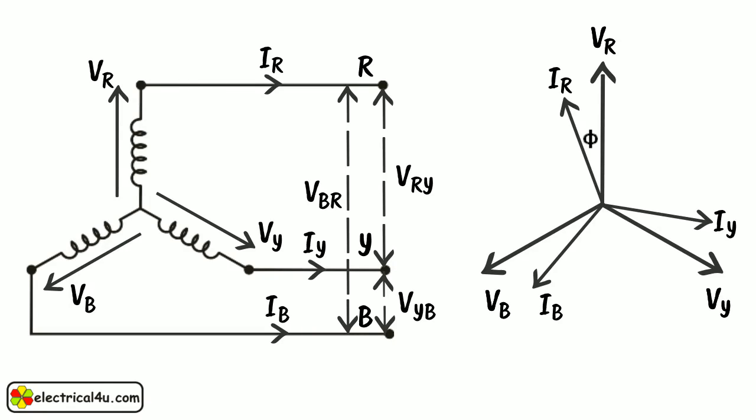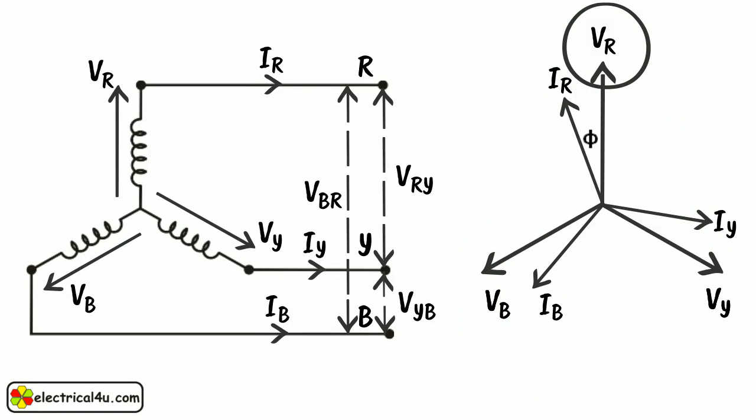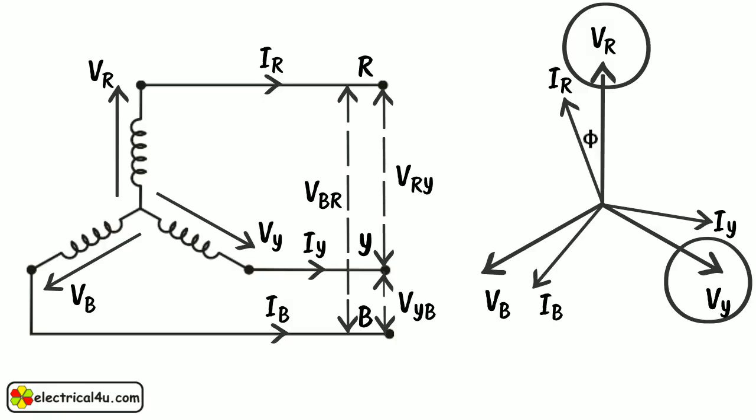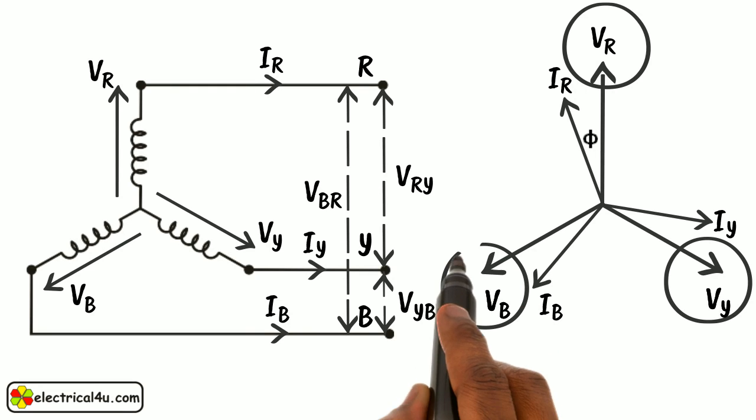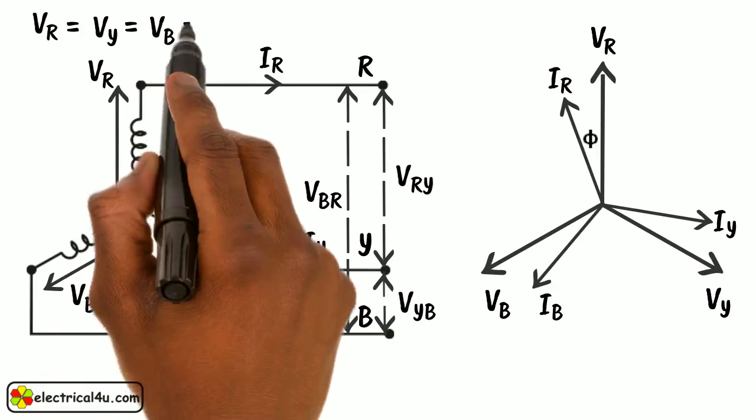Let us say magnitude of voltage across red phase, that is magnitude of voltage between neutral point and red phase terminal, is VR. Similarly, magnitude of voltage across yellow phase is VY, and magnitude of voltage across blue phase is VB. We have already told that all these three magnitudes of phase voltages are same, and say this equals Vph.